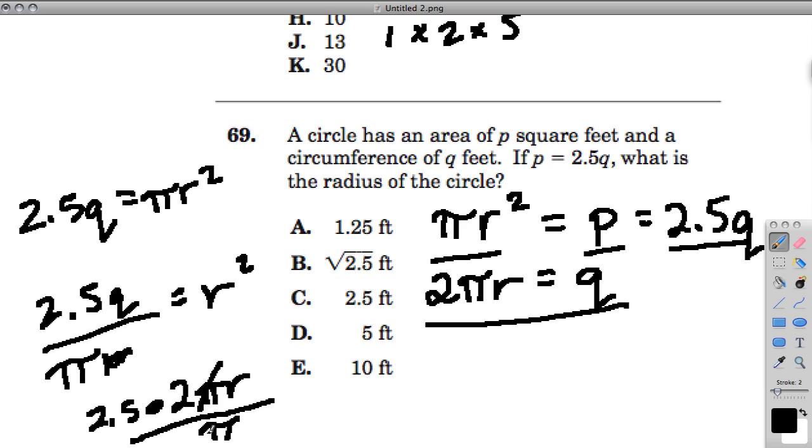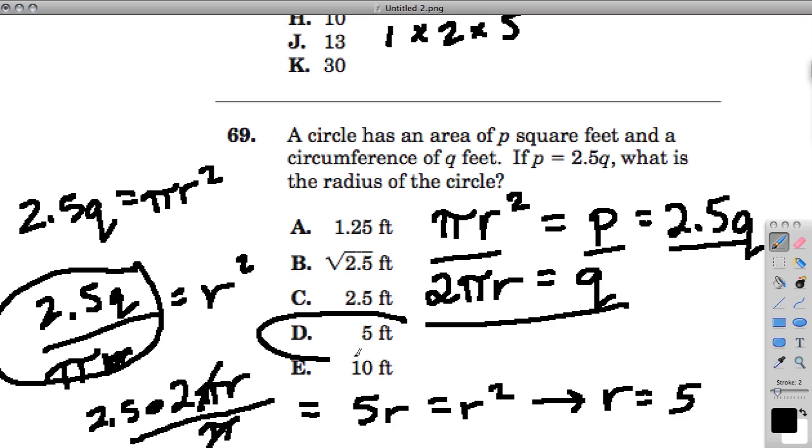The π's will cancel out and we get 2.5 times 2, which is 5. So this equals 5 times r, and that equals r², because r² equals this whole thing to begin with. So now that means if I divide both sides by r, I get r equals 5, and that's the radius of my circle.